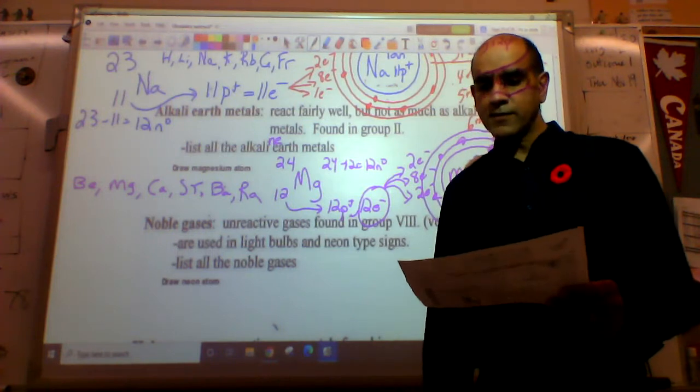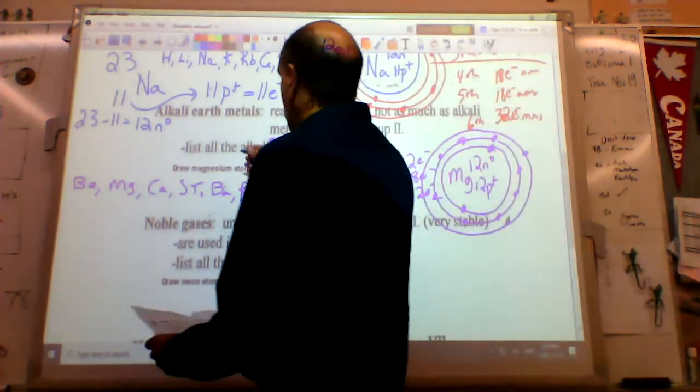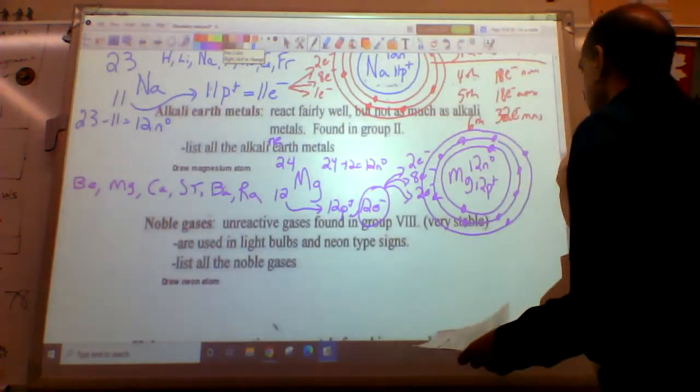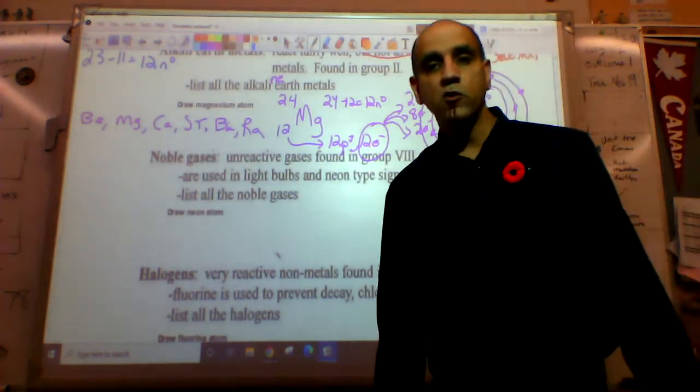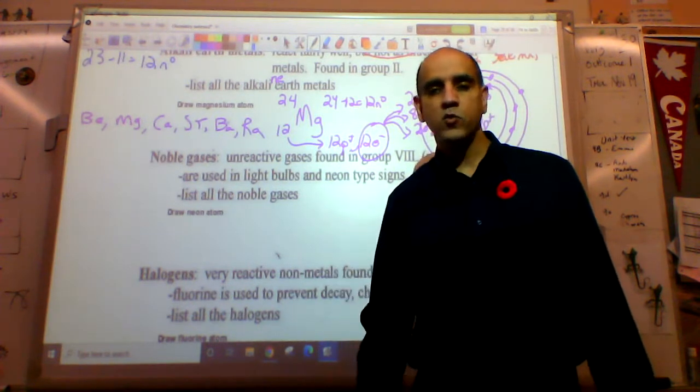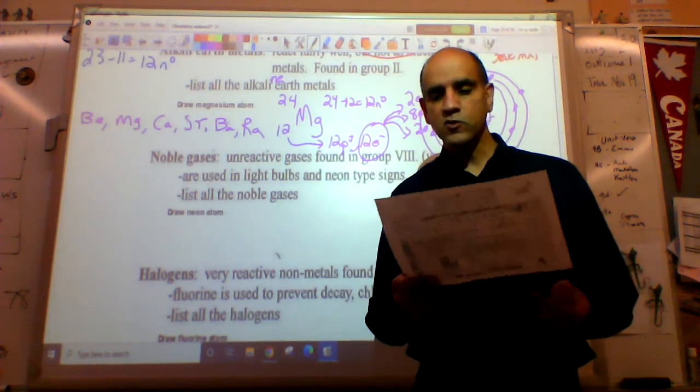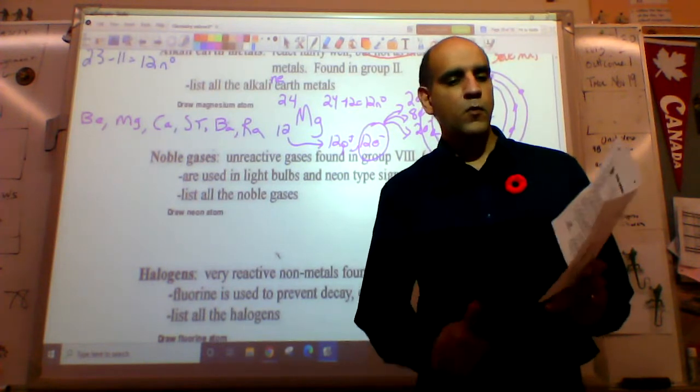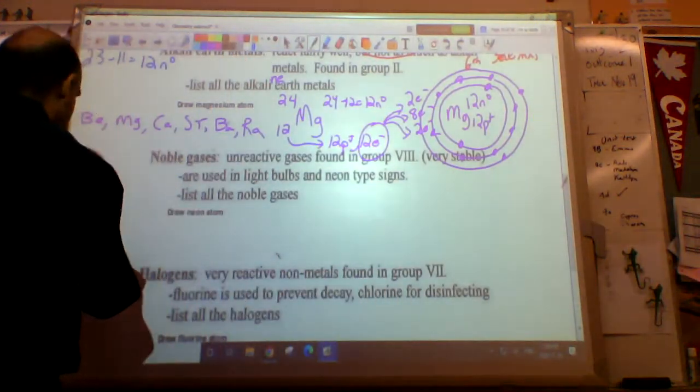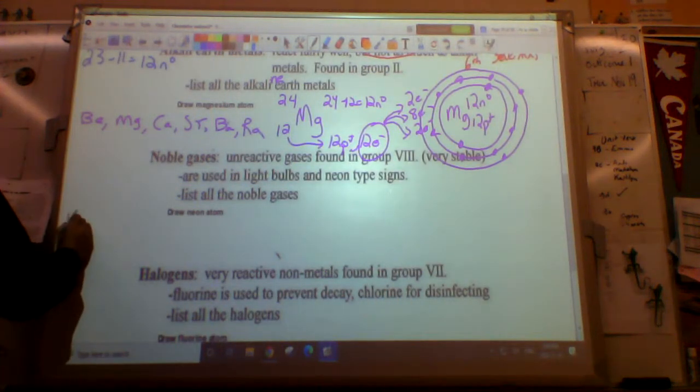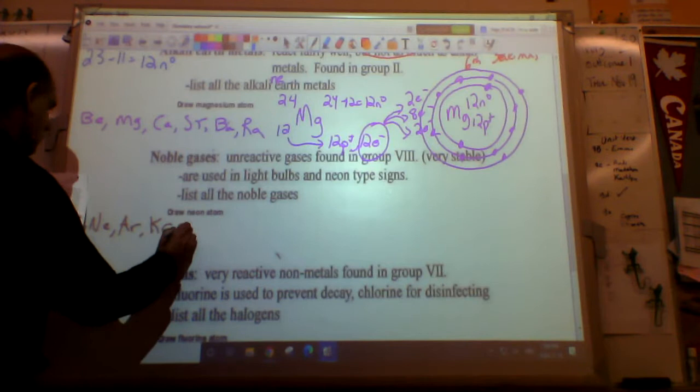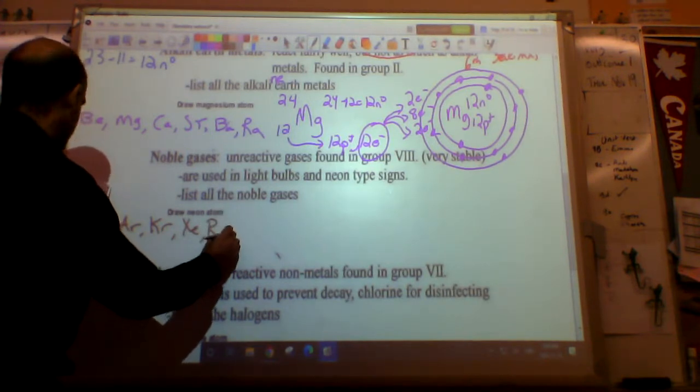Next group is the noble gases. That's way over on the right side of the chart. Noble gases don't react with anything. They're used in light bulbs and neon type signs, as coolants in high-end electronics, and in nuclear physics. They're all on the right side. What they have in common - they don't react with anything. The first one is helium, then neon, argon, krypton, xenon, and radon.